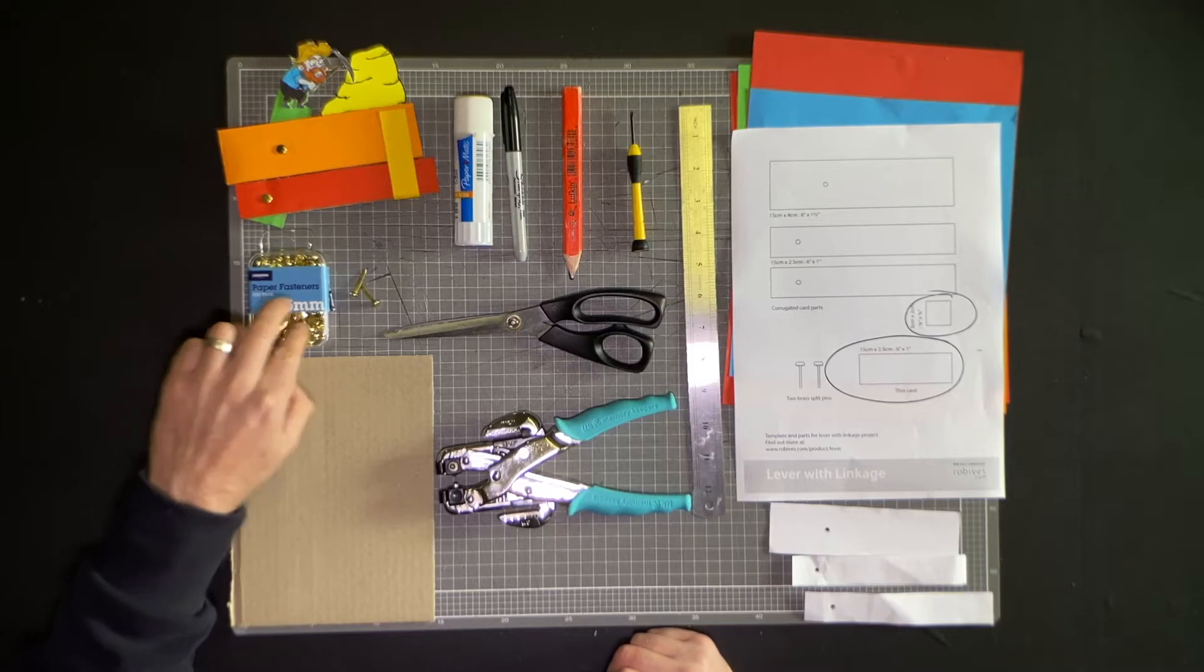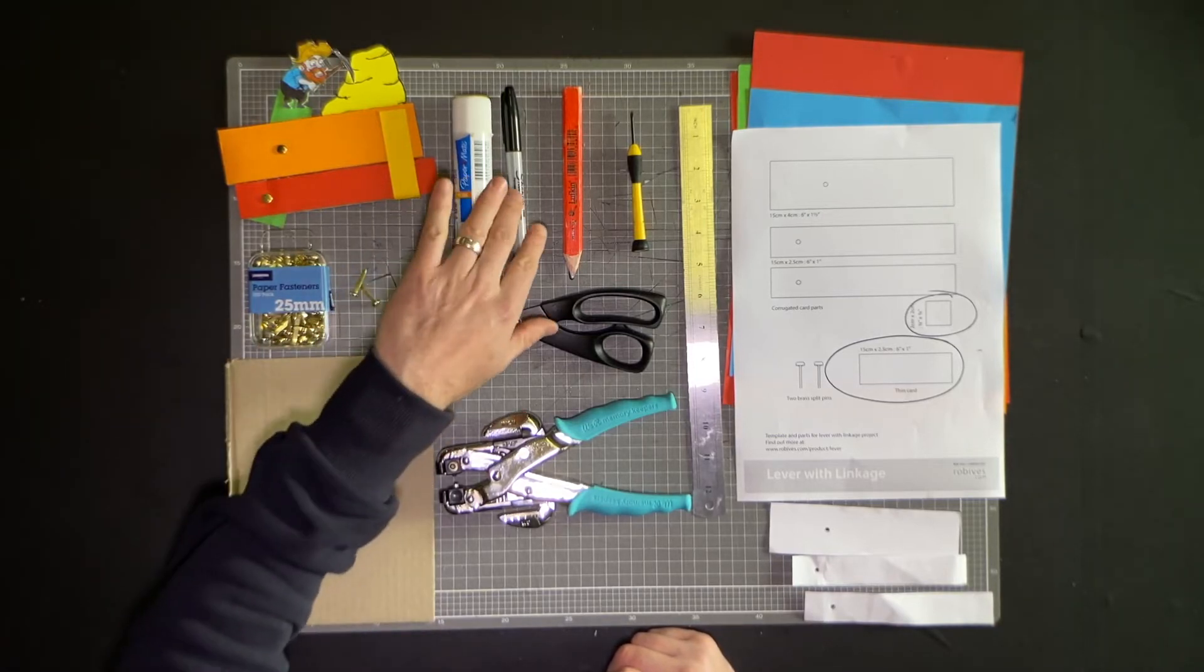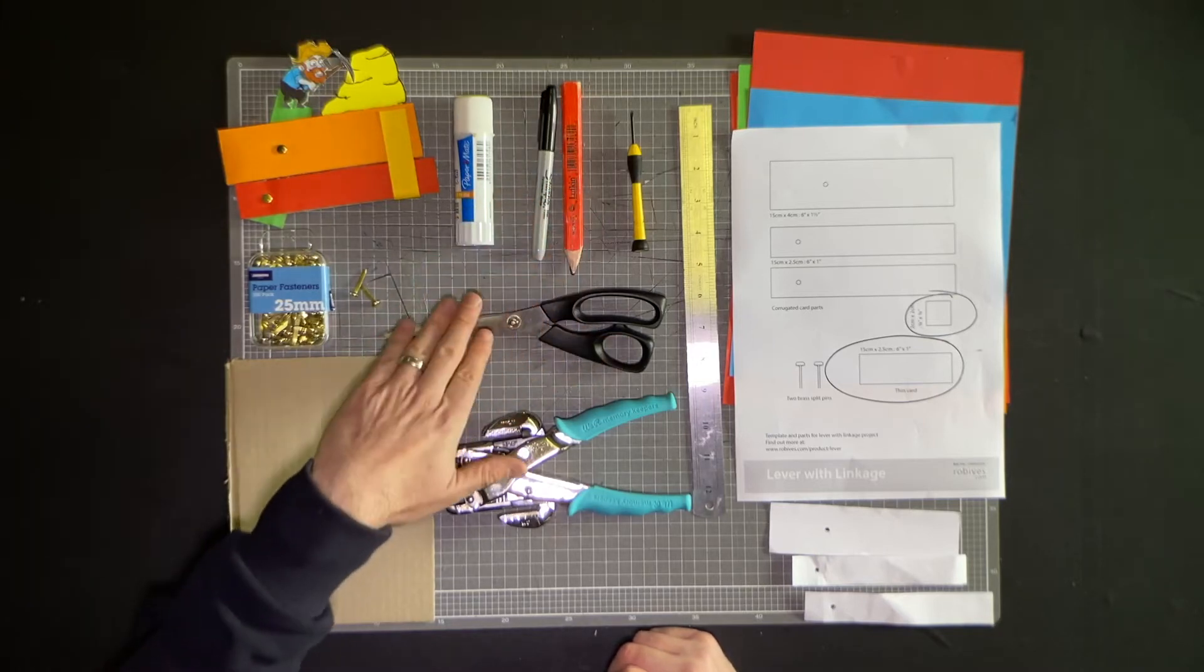You'll need split pins, some cardboard, a glue stick, a marker or a pencil of some kind, and scissors.